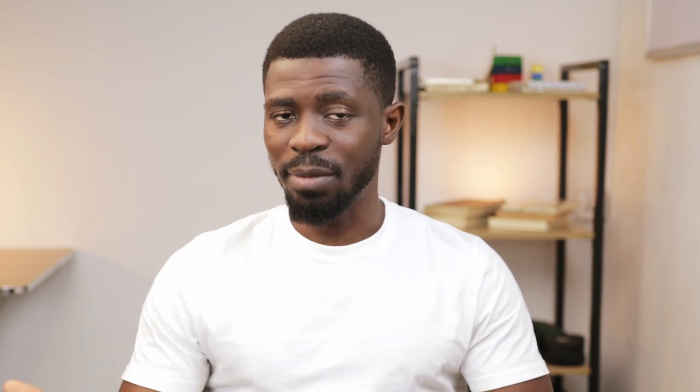A database is a place where data is stored, and databases are also of two types: relational database and non-relational database. In a relational database, data is stored in tables, and a table simply comprises rows and columns of data. To better understand this, let's think of a library.